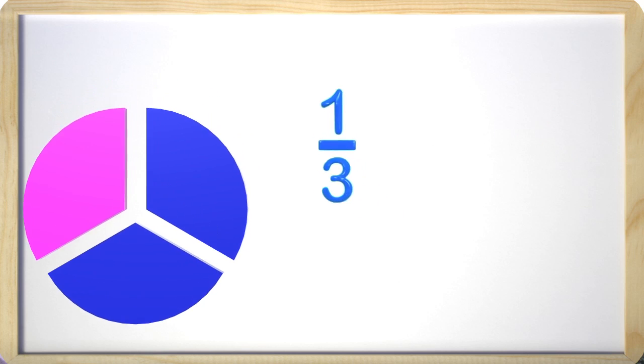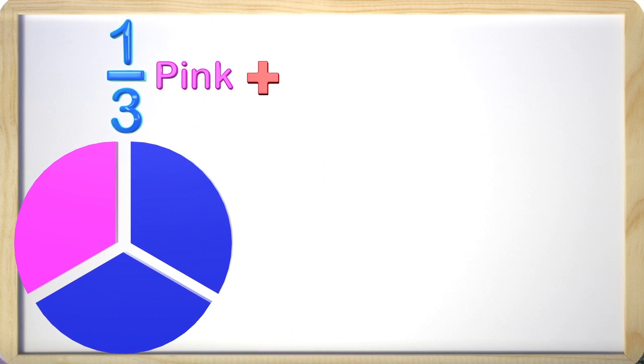We are now going to create an equation by adding the fraction of the blue parts of the circle with the fraction of the pink part of the circle. What is the denominator for the blue parts of the circle? The answer is three because the denominator is always the total amount of parts that make up the whole, and there are three parts.